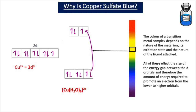Now for the WJEC exam, you only have to explain how colour arises in octahedral complexes. The colour of a transition metal complex depends on the nature of the metal ion, its oxidation state, and the nature of the ligand attached. All of these affect the size of the energy gap between the D-orbitals and therefore the amount of energy required to promote an electron from the lower to higher D-orbitals. This is because it's the repulsion between the ligands' electrons and the transition metal ion's electrons that causes this energy gap.